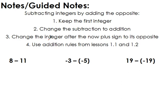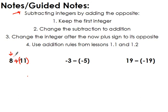Here are our rules for subtracting integers. What we're going to do is called adding the opposite. Step one: we always keep the first integer. Step two: we change our subtraction symbol to an addition symbol. But if I change 8 minus 11 to 8 plus 11, I've completely changed the problem, so I have to change something else. I then have to change the next integer to its opposite — because this is positive 11, I now make it negative 11. So 8 minus 11 becomes 8 plus negative 11.